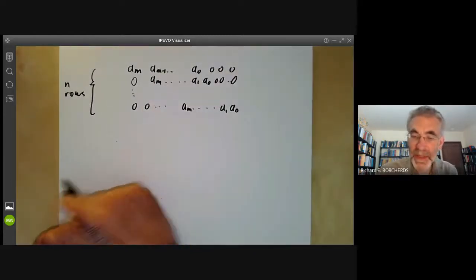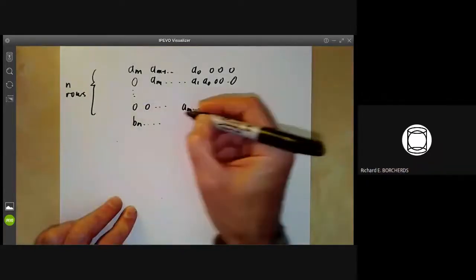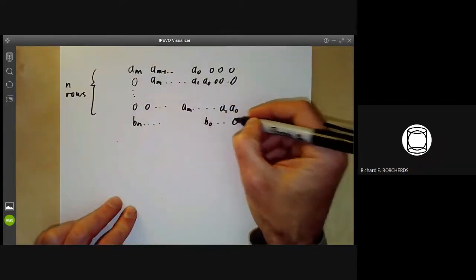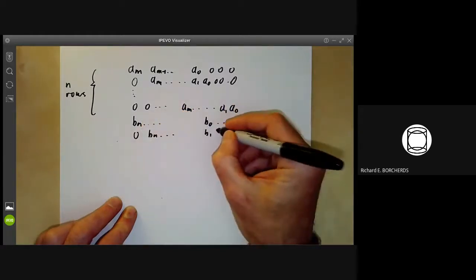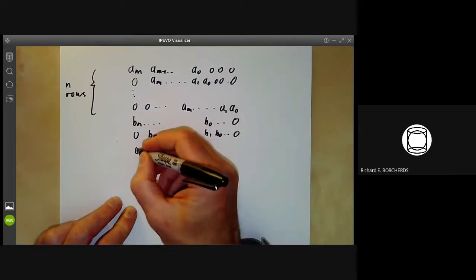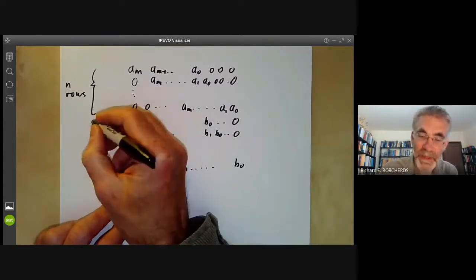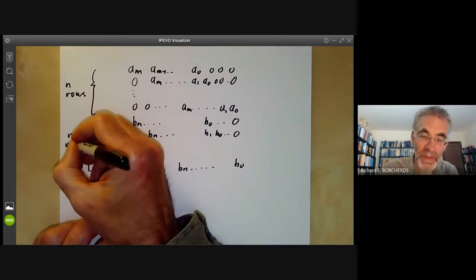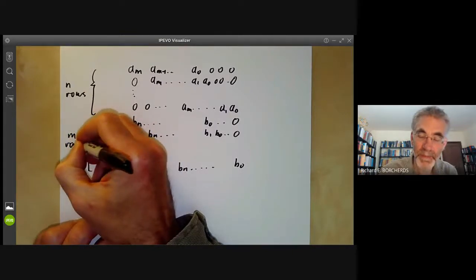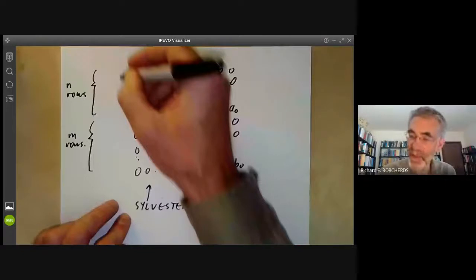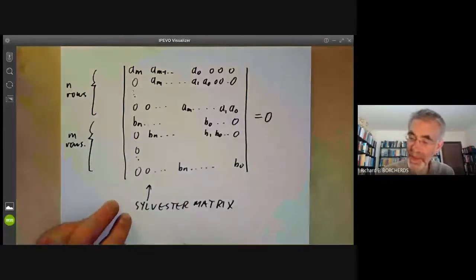And then we do the same thing all over again with the other polynomials. So we have bn going down to b0, some zeros, zero, bn, b1, b0, zero. So then we have all the way down to here, and then we get zero all the way up to bn, b0 there. And we do this with m rows. So this is the, we take its determinant and set this determinant equal to zero. And this determinant is called the resultant.